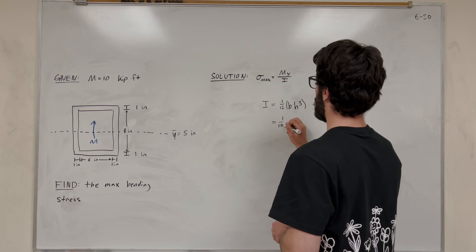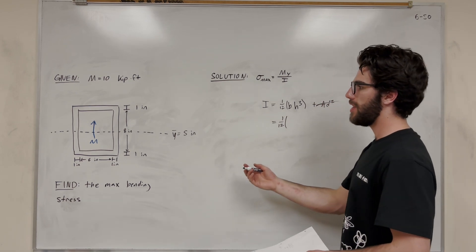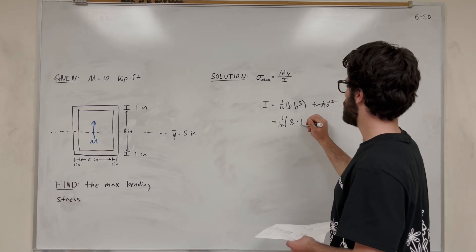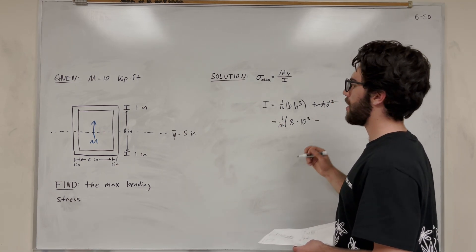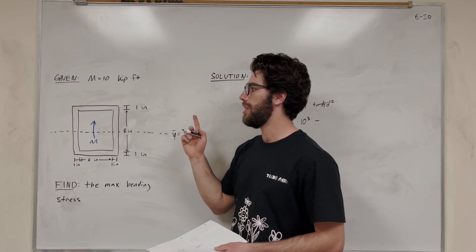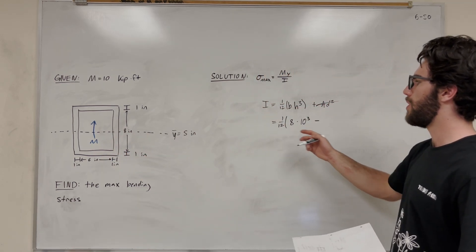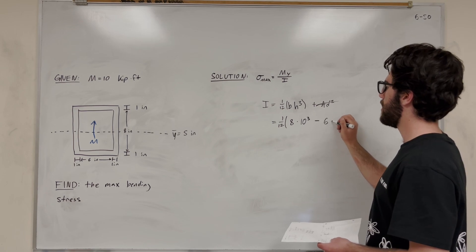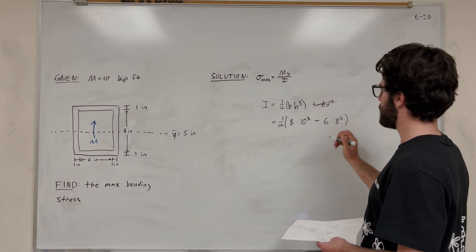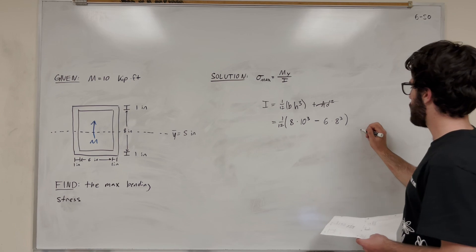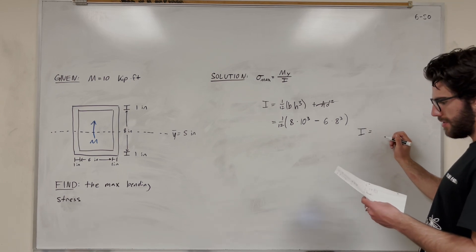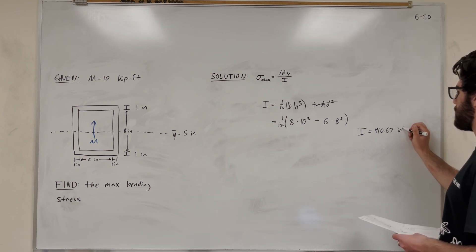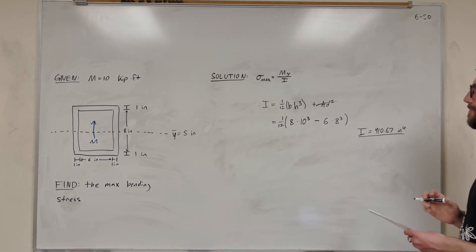So it's going to make this part not necessary. So let's go ahead and do that. So 1/12 the base of the big rectangle is 8 inches, and then the height of the big rectangle is 10 inches. So 10 to the third. Then we're going to subtract that moment of inertia from the moment of inertia of the inner rectangle. And I factored out the 1/12 because it's going to be in both. So the base of the inner rectangle is 6, and the height of the inner rectangle is 8. So you're going to find that moment of inertia is equal to 410.67 inches to the 4th.